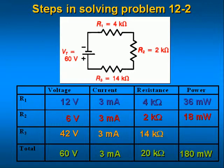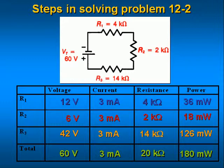For R3, the power dissipated is 42 volts times 0.003 amps equals 0.126 watts or 126 milliwatts. Note that the sum of the power dissipated by the three resistors adds up to the power supplied by the power supply. Note also that the sum of the voltages across each resistor adds up to equal the power supply voltage.